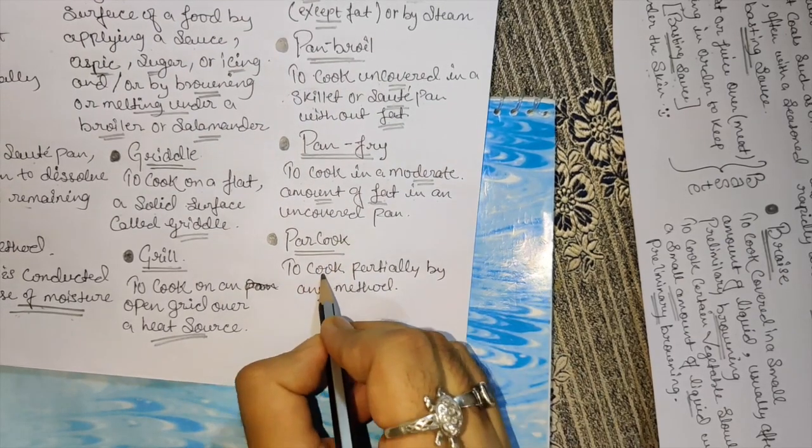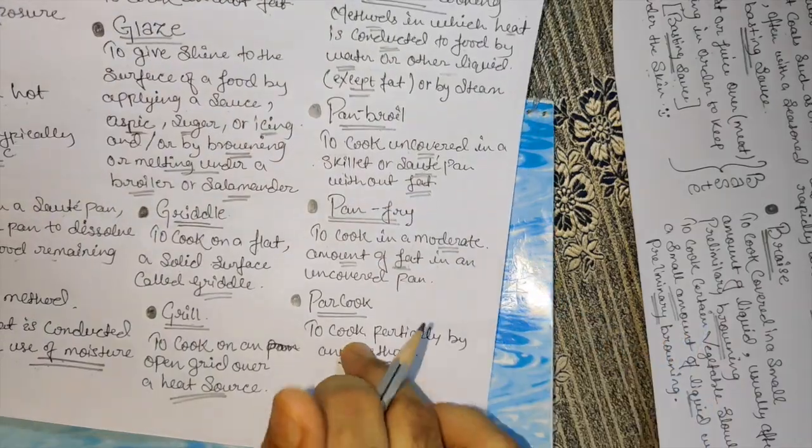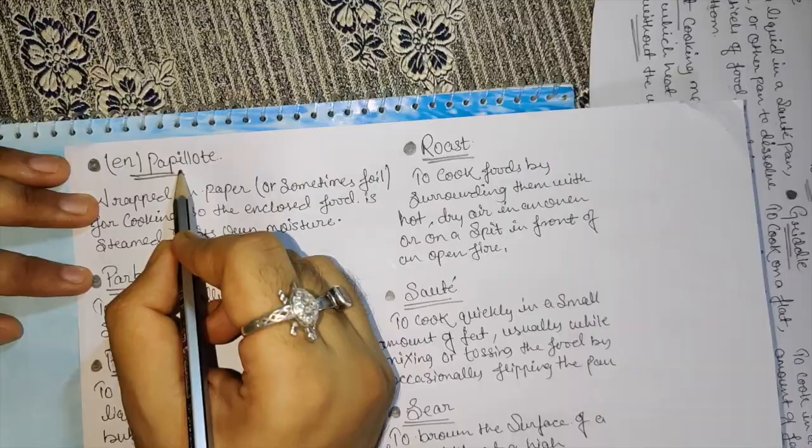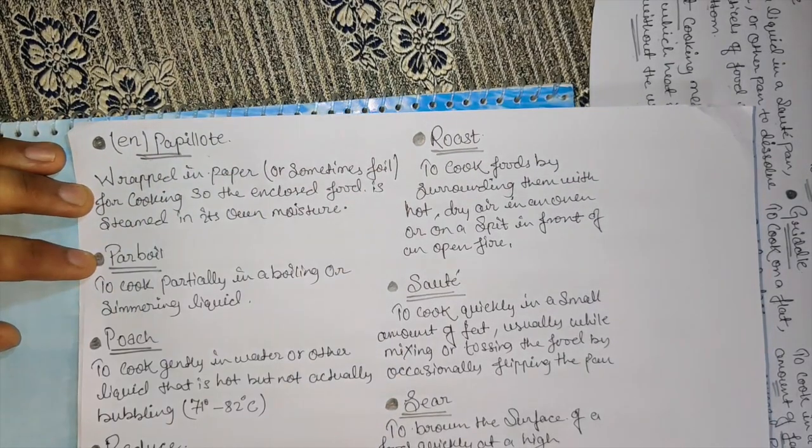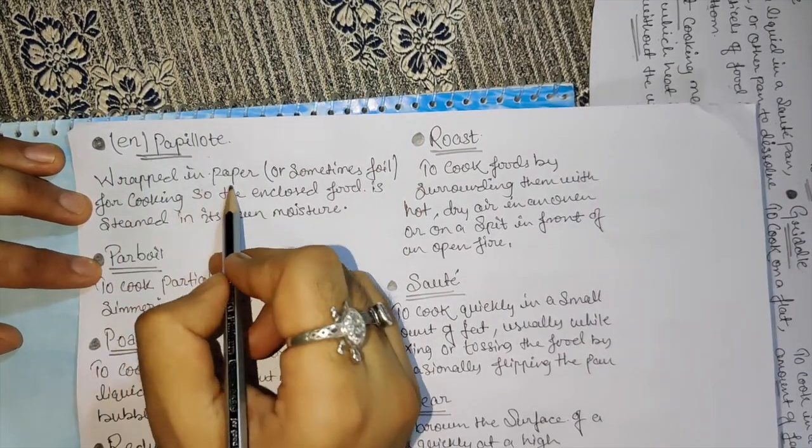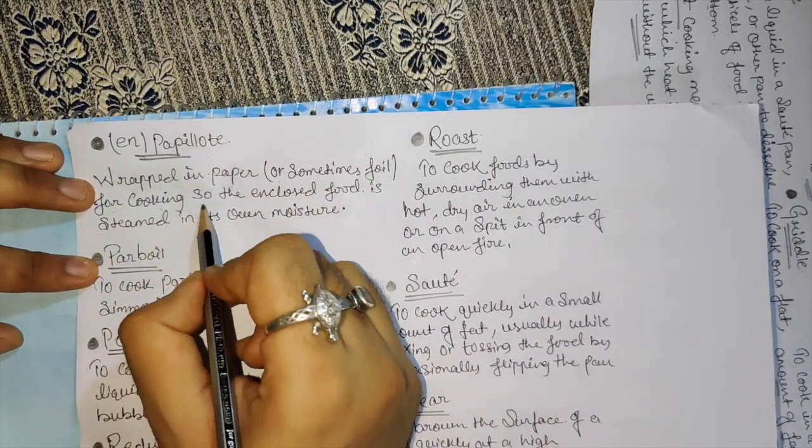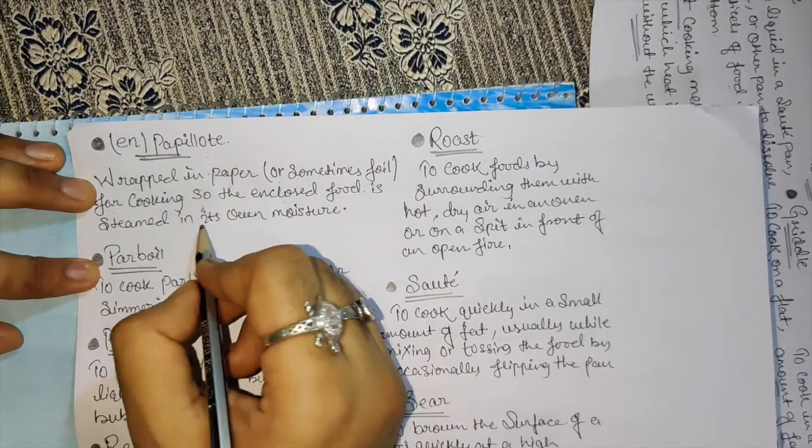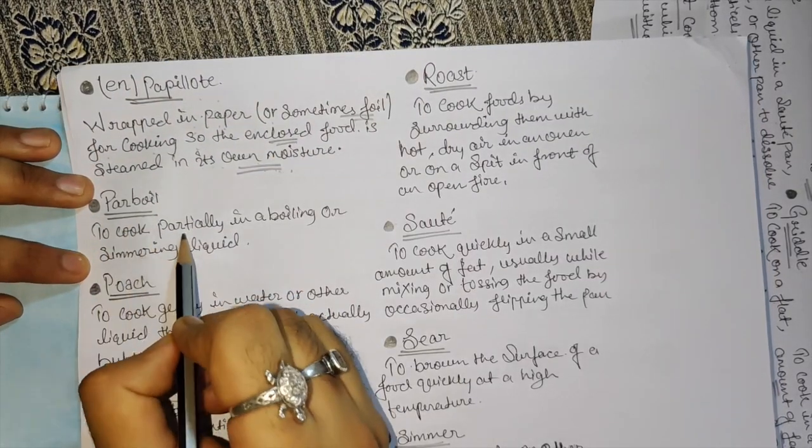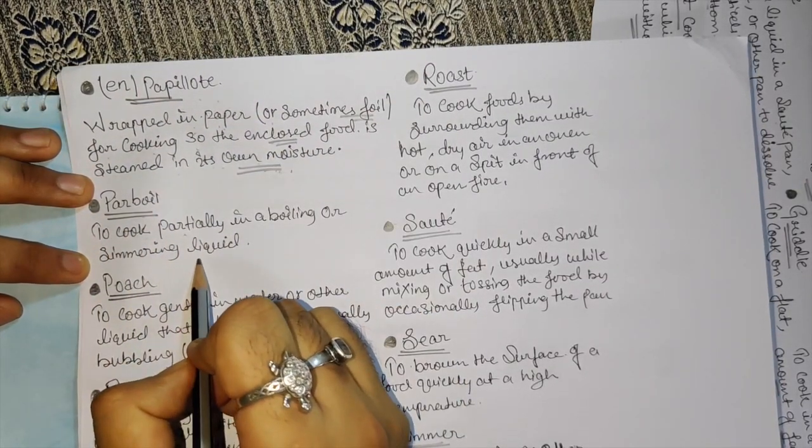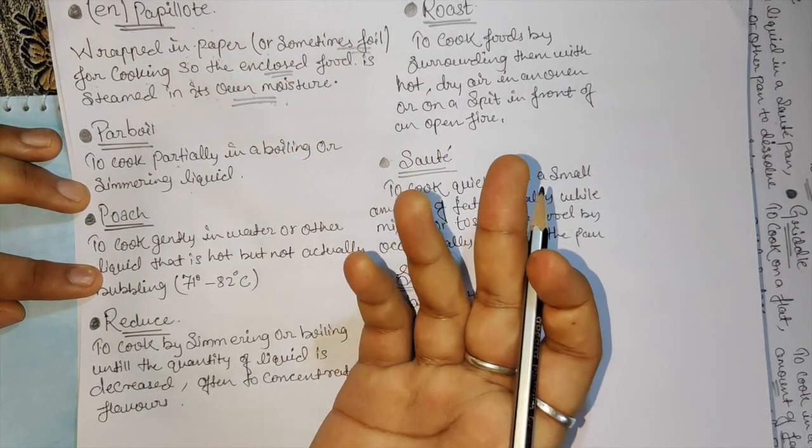Par cook - to cook partially by any method, for further cooking in the main process. En papillote - wrapped in paper or foil. The enclosed food is steamed in its own moisture. Par boil - to cook partially in boiling or simmering liquid, just like par cook.